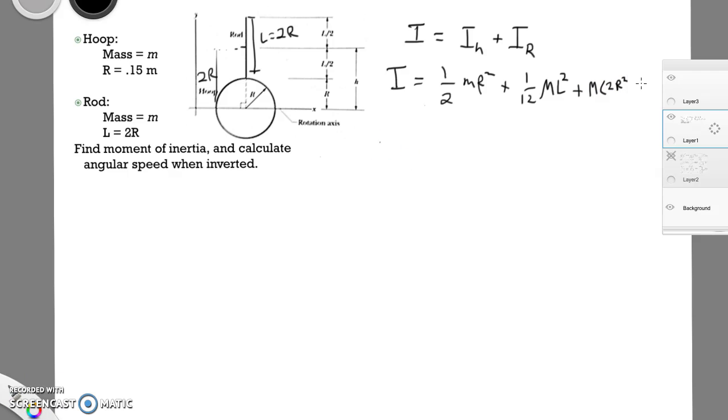All right, so I just made a quick little mistake there. The square should be outside here. And then remember that L, which is the length of this rod, is also 2R. So we have 1 half MR squared.